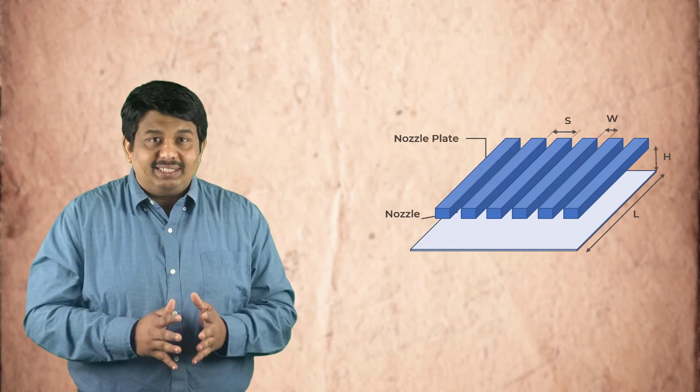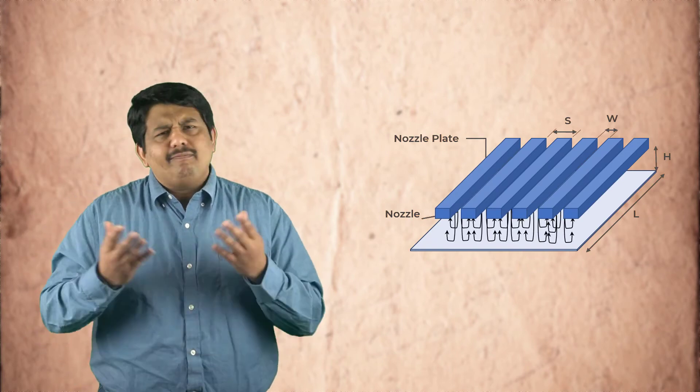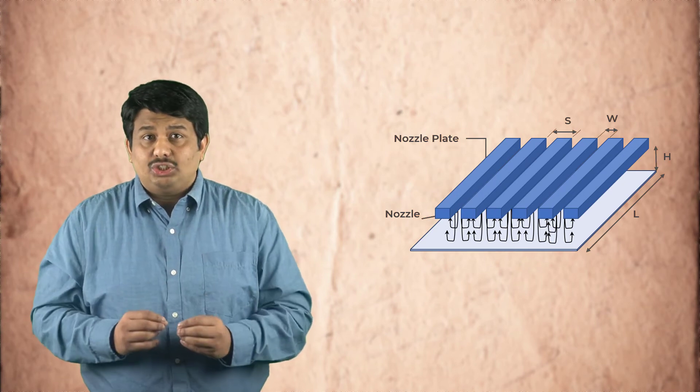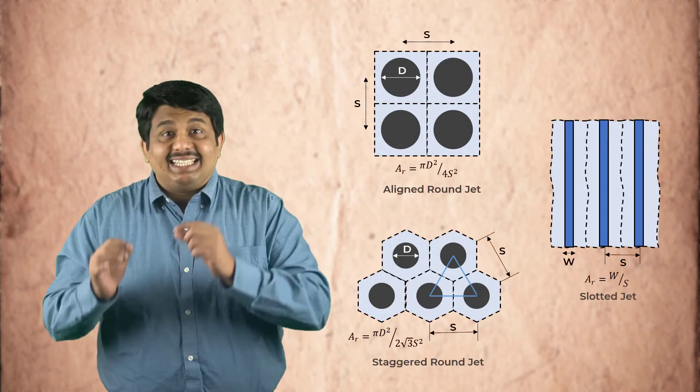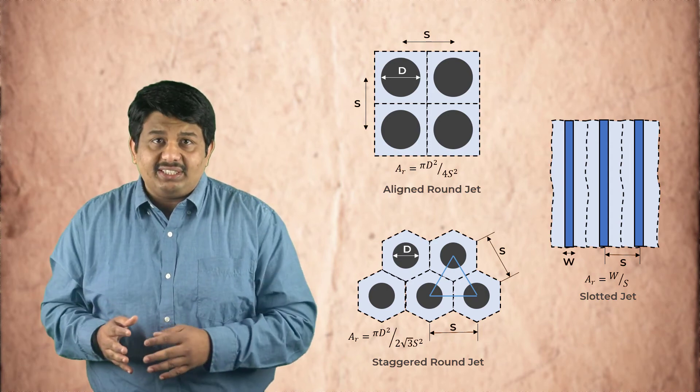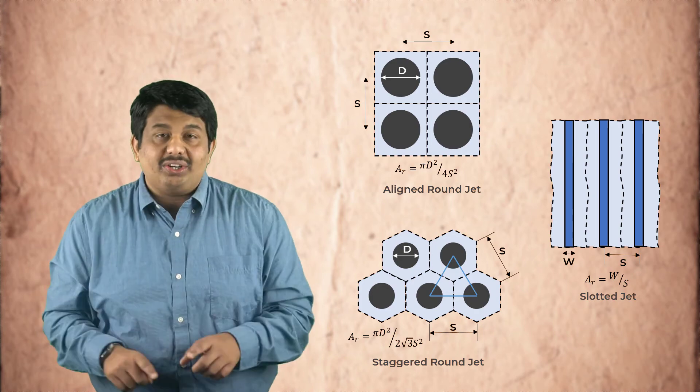Most configurations of impinging jets used for heating or cooling applications have multiple jet arrays. Due to interaction of adjoining jets, secondary stagnation zones can also be formed. Once the fluid from the jet extracts or imparts heat from or to the surface and can no longer be used for heat transfer purposes, this fluid is generally referred to as the spent gas. The overall heat transfer from or to the surface strongly depends on how the spent gas is vented from the system. For the configurations shown here, if the spent gas can escape through the vents between the nozzles, equivalent local and average values of convection coefficients exist in close proximity, the dotted region of the nozzle.